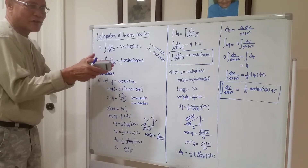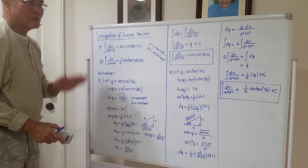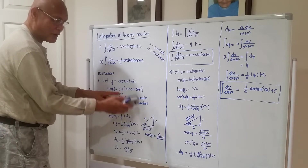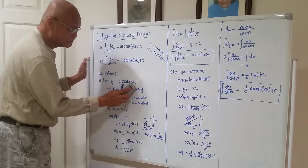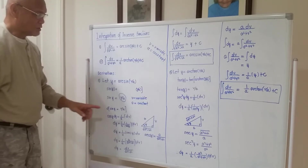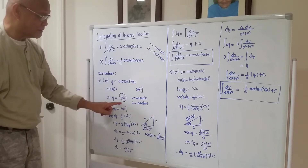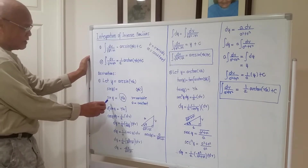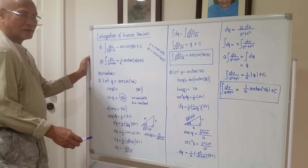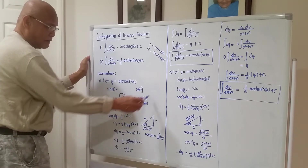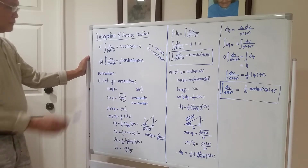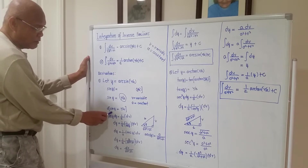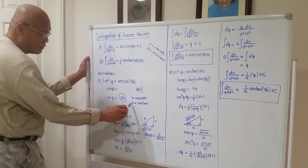So sine of y equals b over a, where b is a variable and a is a constant. Take now the differential of both sides. The differential of sine of y equals b over a. Take the differential of all terms.